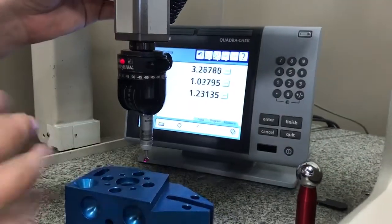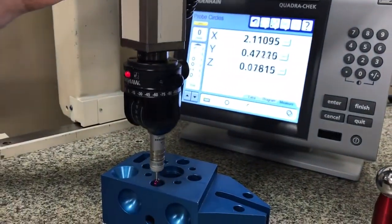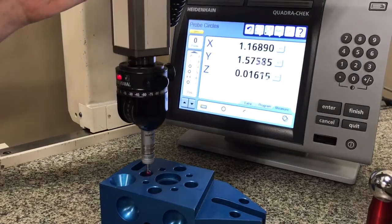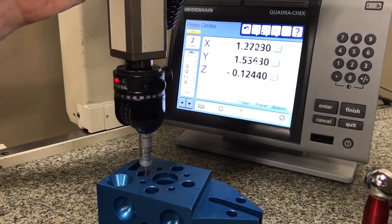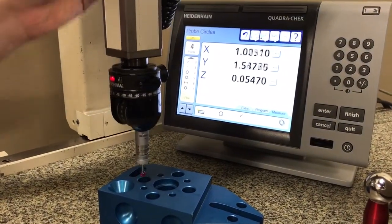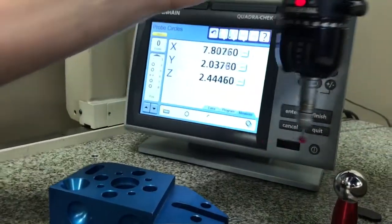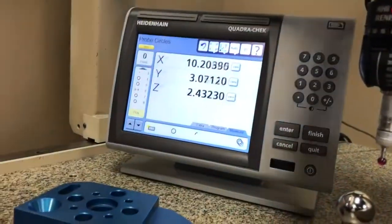Press finish, and then it'll prompt you to do the next one. Now I have four circles.